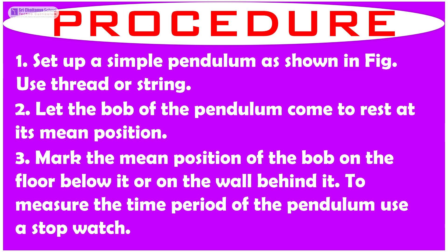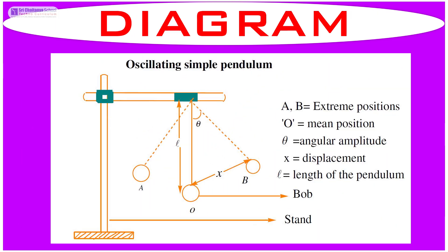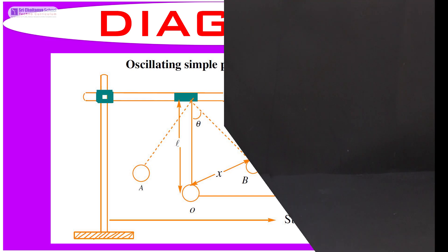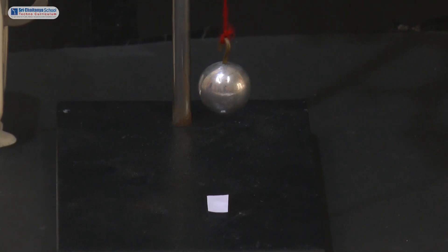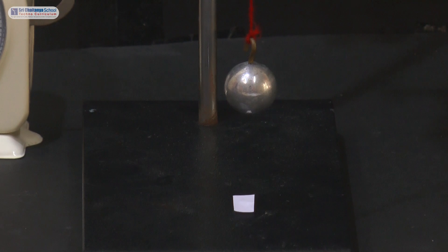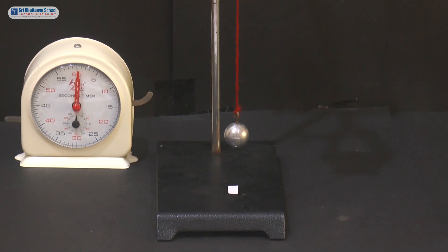Now it is time to see the procedure. Set up a simple pendulum as shown in the figure. Let the bob of the pendulum come to rest at its mean position. Mark the mean position of the bob on the floor below it or on the wall behind it. To measure the time period of the pendulum, use a stop watch.